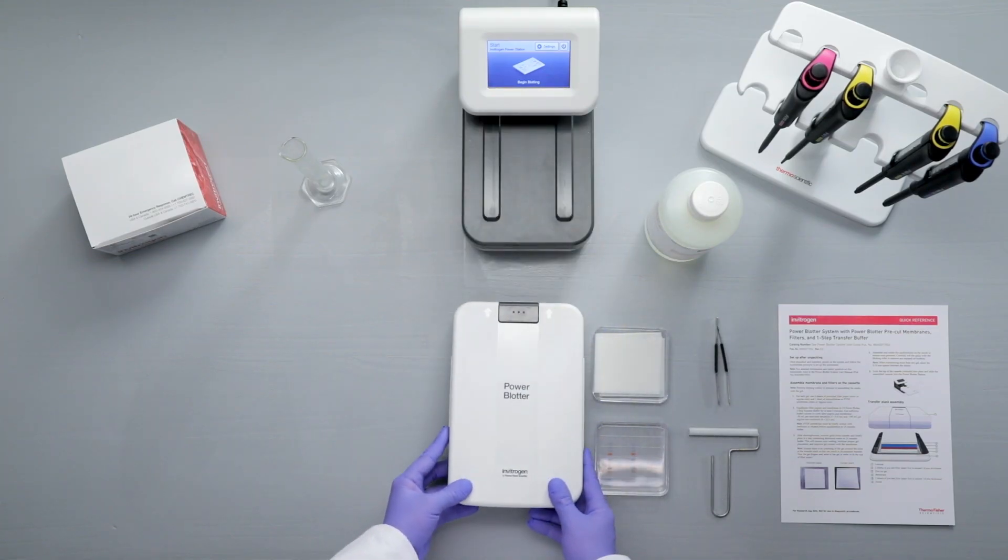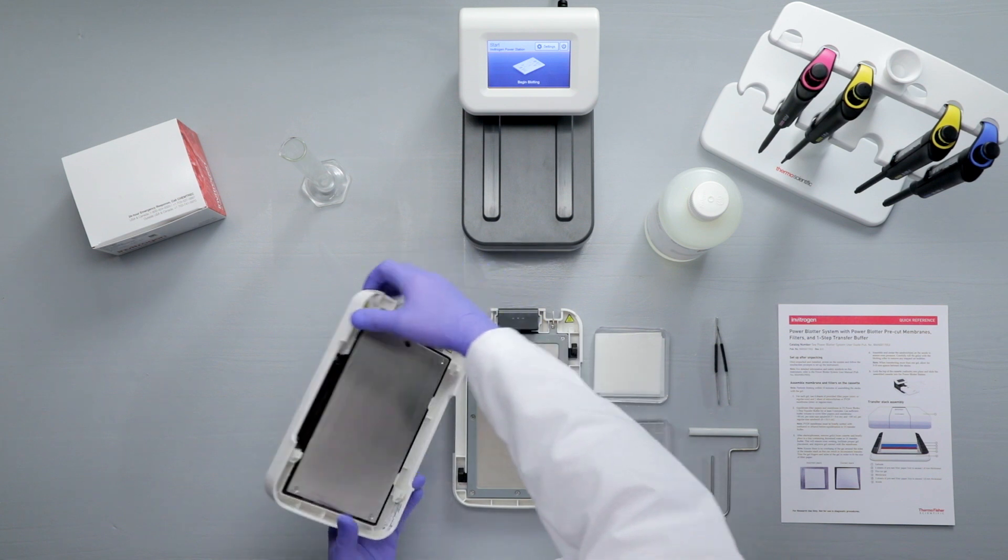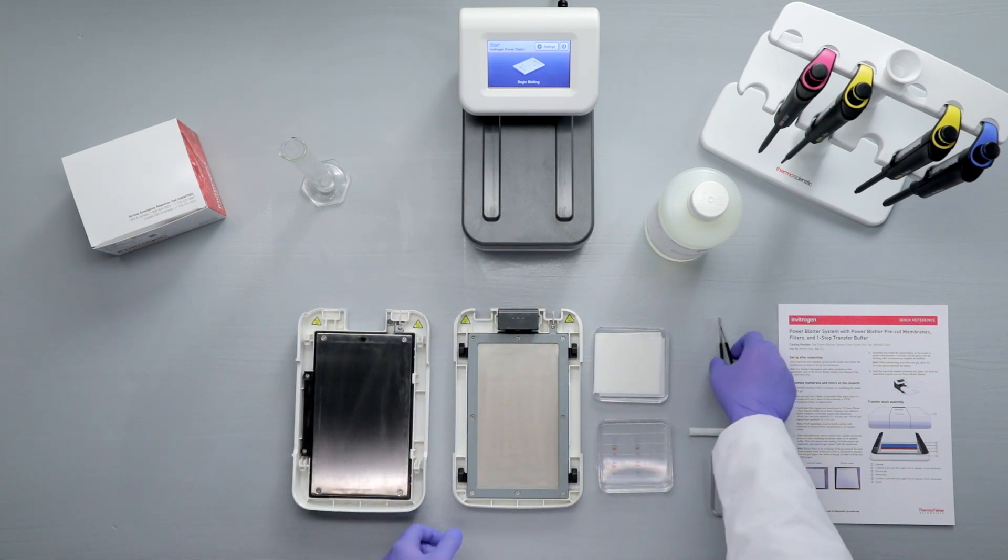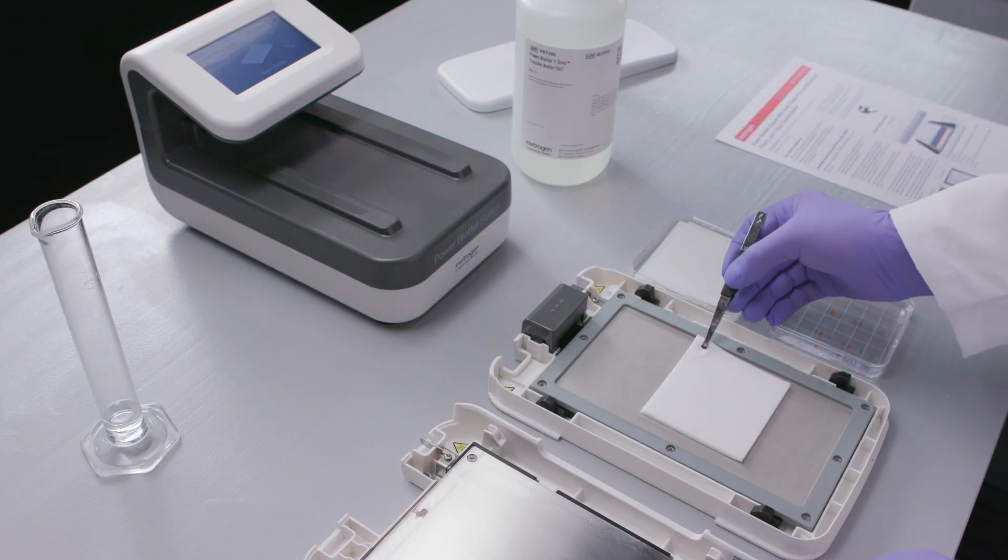Open the Power Blotter cassette by pressing the gray button on the lid. Remove two pieces of filter paper from the buffer and place them in the center of the bottom part of the cassette.